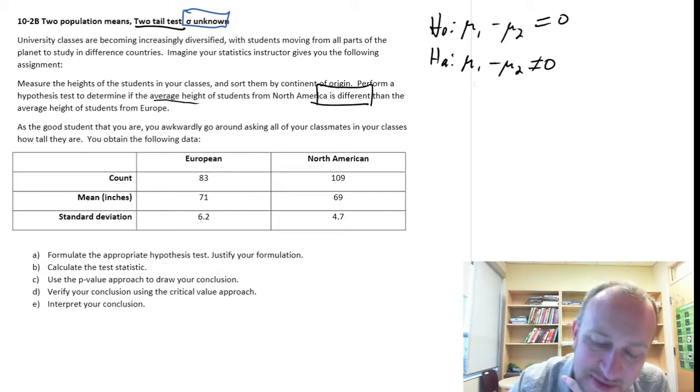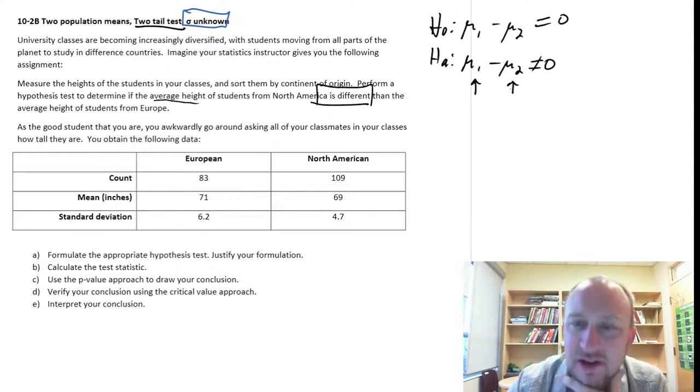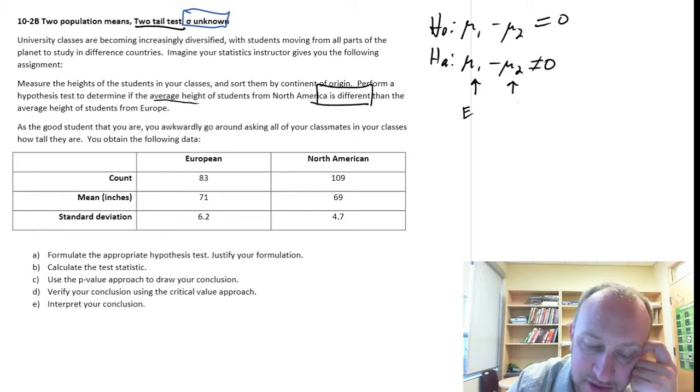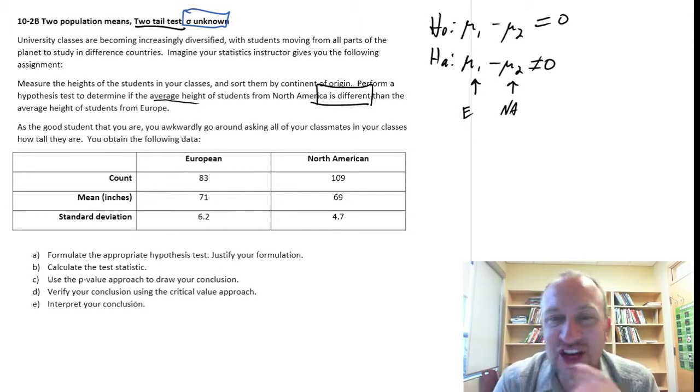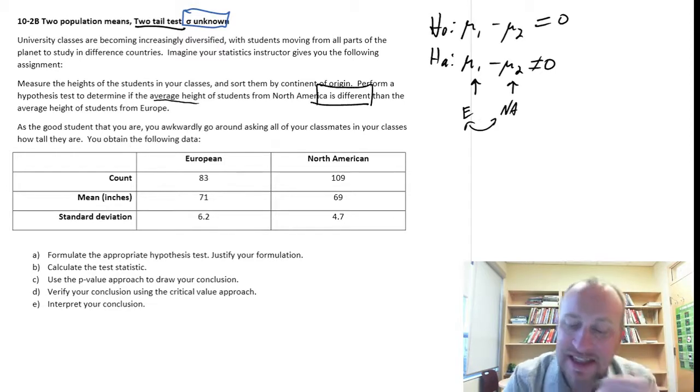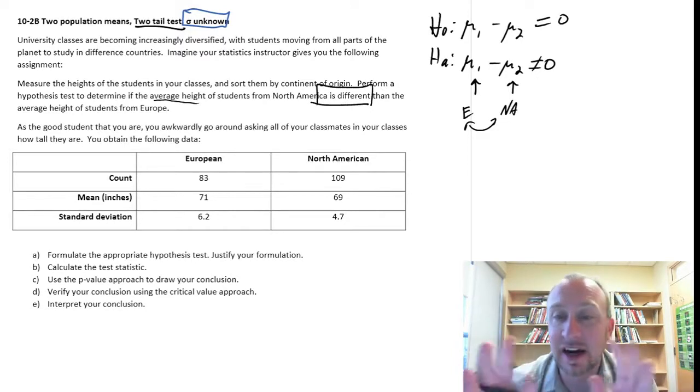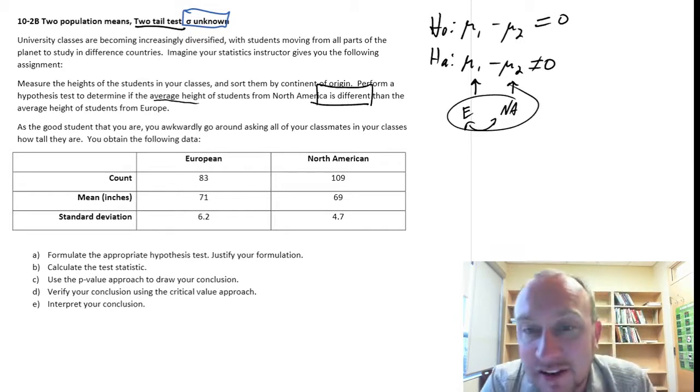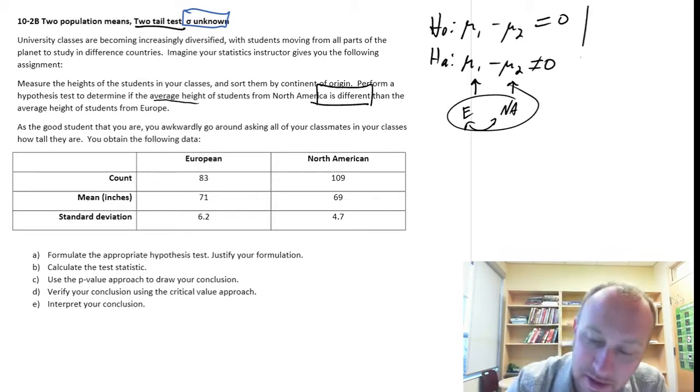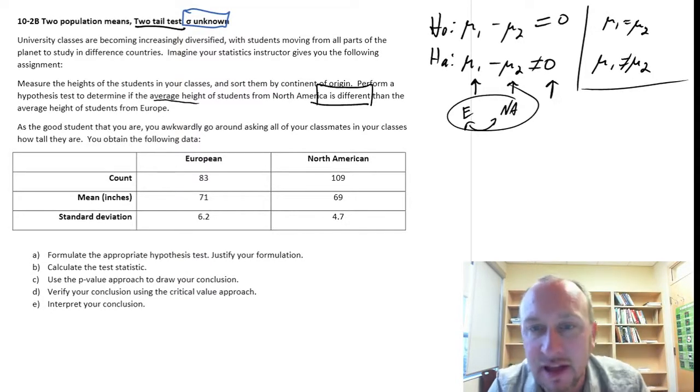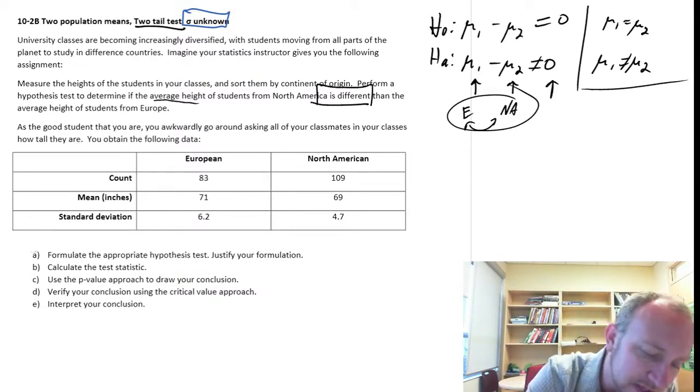When we're doing a two-tail test, it becomes a little bit less critical that we put thought into how we define our populations. I'm going to call this my European and these will be my North American, but really it doesn't change things. You could imagine if I were to switch these around, it doesn't change the nature of the test in the same way that it would for a one-tail test. If you remember, when we're performing a one-tail test, whether it's upper tail or lower tail is entirely dependent on exactly how those terms are defined. Two-tail test, a little bit less important.